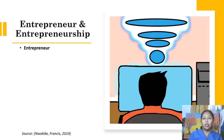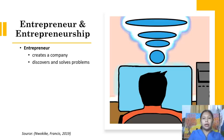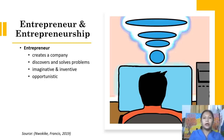Entrepreneur and Entrepreneurship. So what is an entrepreneur? It is an innovator or a developer who recognizes and seizes opportunities. He is a person who creates a company or a business and discovers and solves problems. He is also imaginative and inventive, opportunistic, risk-taker, and self-starting and open-minded, which aims to make a profit from the enterprise.